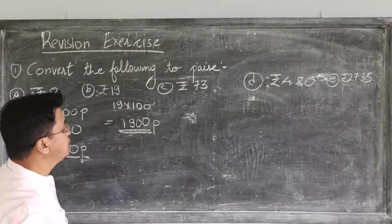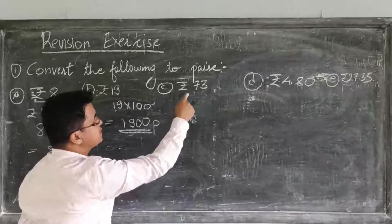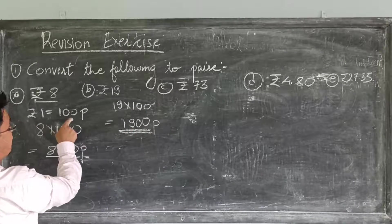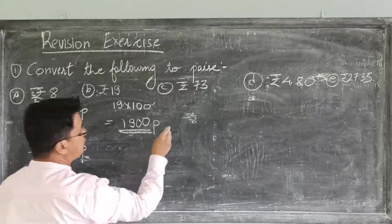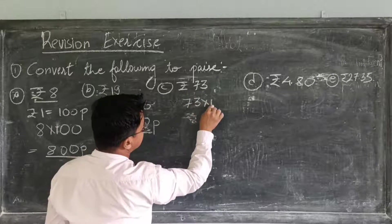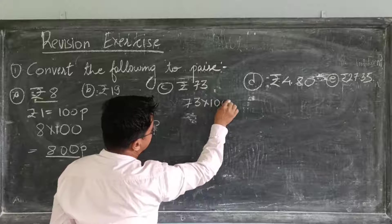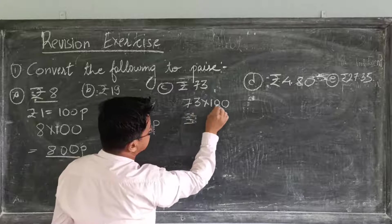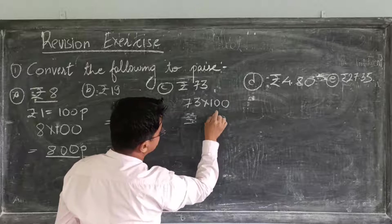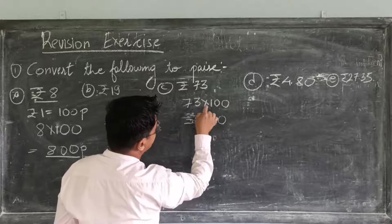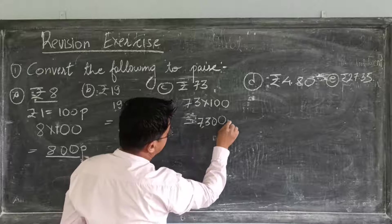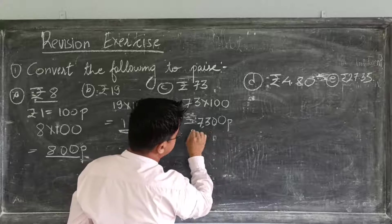Now, C. Rupees 73. 1 rupee is equal to 100 paise. So 73 rupees is equal to 73 into 100. Working it out: 73 ones are 73, so the answer is 7300 paise.